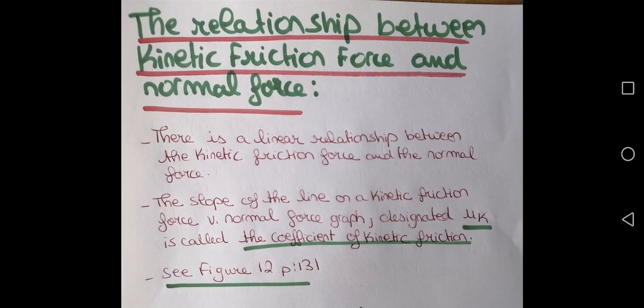The relationship between kinetic friction force and normal force: there is a linear relationship between the kinetic friction force and the normal force. The slope of the line on a kinetic friction force versus normal force graph is designated UK and it's called the coefficient of kinetic friction. You can see figure 12, page 131, to see such a graph. The coefficient of kinetic friction shows the linear relationship between the kinetic friction force and the normal force.